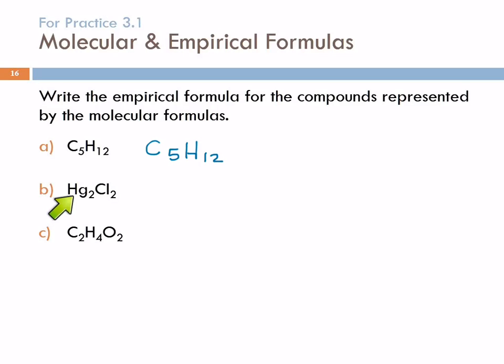How about Hg2Cl2? Just HgCl—that's the lowest ratio. How about C2H4O2? CH2O. We can take each of these subscripts and divide by 2, so the lowest ratio is 1 to 2 to 1.